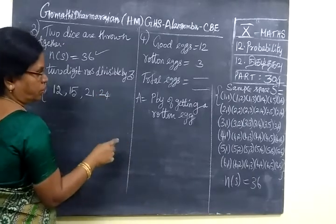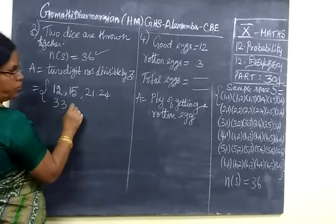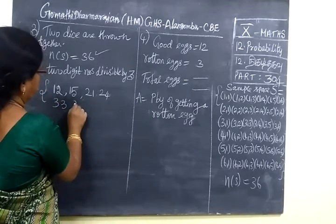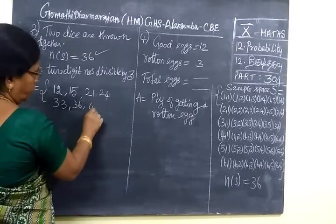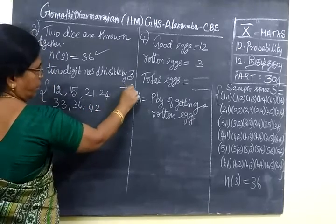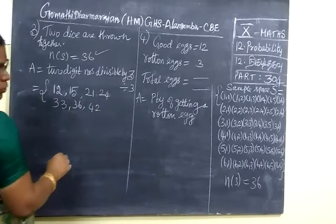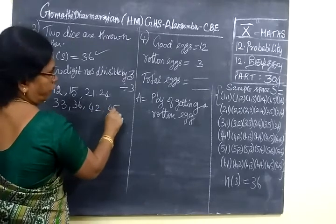Then third row 33, then 36. Then fourth row 42. These are all divisible by 3. 42, then 45.